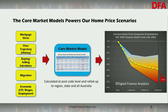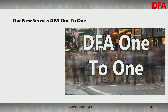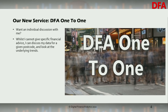This is an example of Clayton South in Victoria showing prospective home price movements from this point, based on our central case from our scenarios. The other day, we launched our new service called DFA One-to-One, which is essentially an opportunity to have an individual discussion with me one on one. And whilst I can't give specific advice, I can delve into my data and look at individual postcodes and underlying trends.